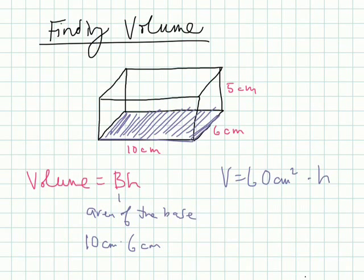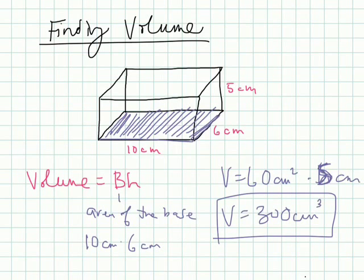And then times the height, which in this case is 5, 5 centimeters. And you get the volume equals 300 centimeters cubed. Real simple. You just find the area of the base, and you multiply it by the height. That's it.